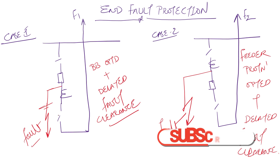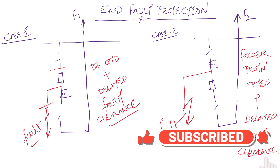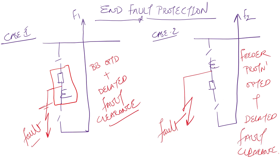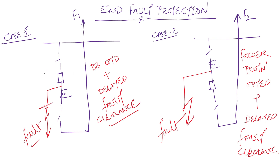Consider case 1 — suppose there is a fault between the breaker and CT. This fault is in the busbar zone. If the disconnectors are closed, the feeder will also see the fault but in the reverse direction and will not operate instantaneously. The busbar will see the fault, and the busbar relay will issue an instantaneous trip command. Once busbar protection operates, it will trip this circuit breaker and all other circuit breakers connected to this bus.